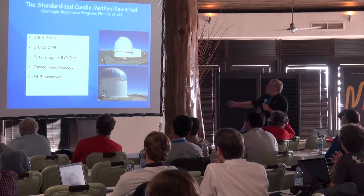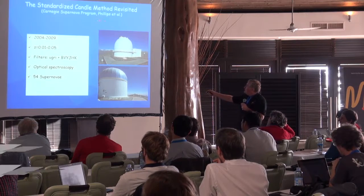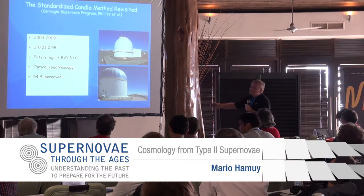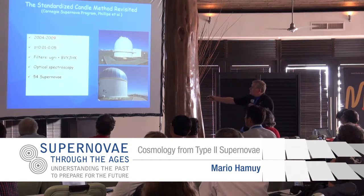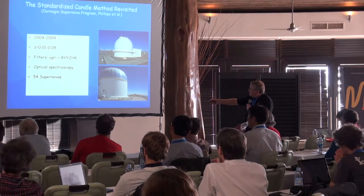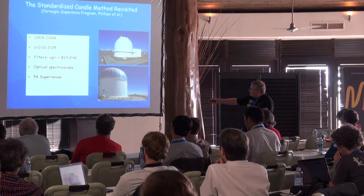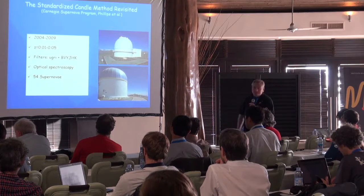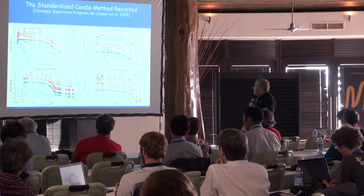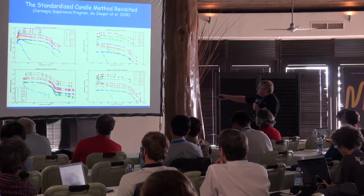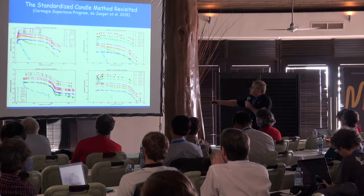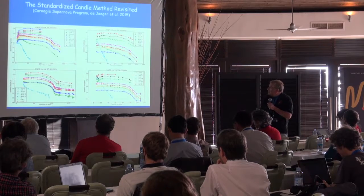The Carnegie Supernova Program, led by Mark Hamuy, started in 2004. The first phase went on through 2009 — this is low-redshift. Data were obtained in Sloan, Johnson, and infrared filters. Optical spectroscopy was obtained before the supernovae. You can see the high quality of the data, with very good coverage over different wavelengths.